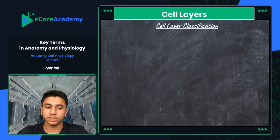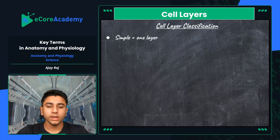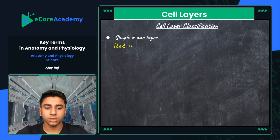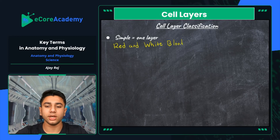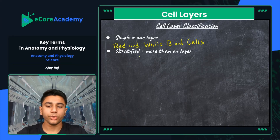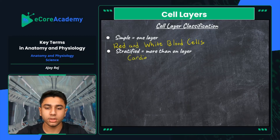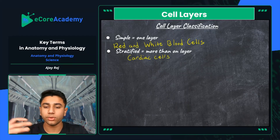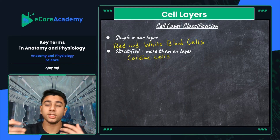Now let's look at cell layer classifications. First, 'simple' means a single-layered cell — examples include your red and white blood cells, which have one very specific function. Then we have 'stratified,' meaning more than one layer. Stratified cells are more complex — they include your cardiac cells in the heart, which deal with electric stimulus. Stratified means the cell needs more protection and has a more complex process.